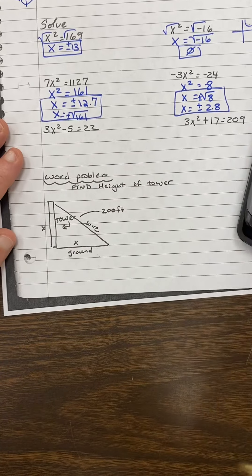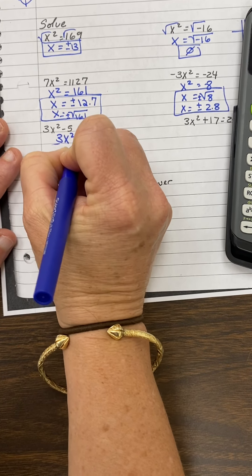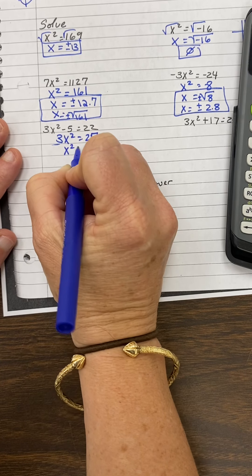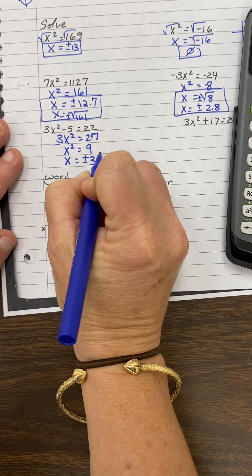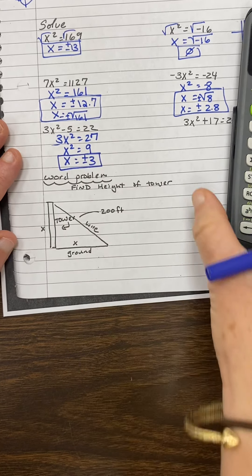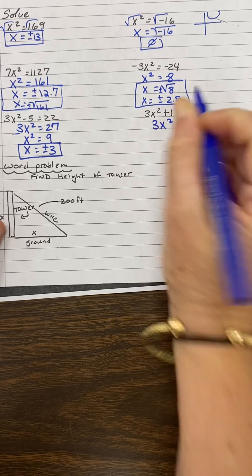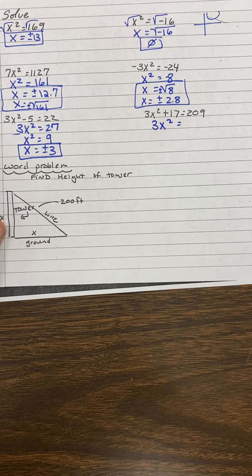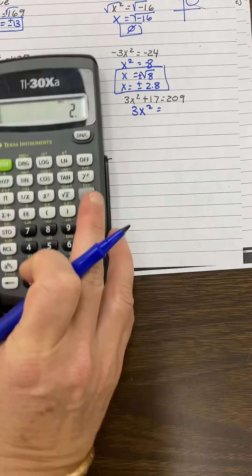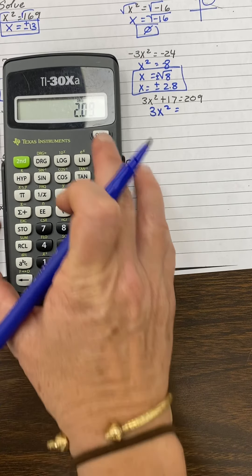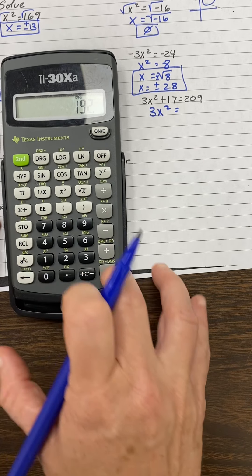So these are just like solving equations, like what we've been doing for so long. Add five to both sides, divide by three, subtract 17. Just use regular algebraic steps to isolate the X squared term before you square root.